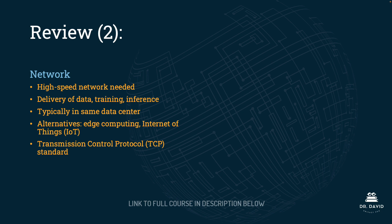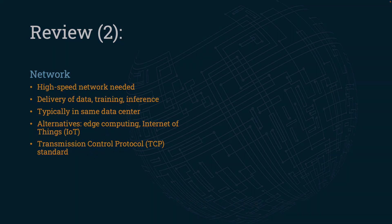When it comes to network, remember that a high-speed network connection is necessary. This helps to better facilitate the delivery of the data, improves the training, and then later the inferences. It's best if everything is under one roof in the same data center, but there are alternatives such as edge computing and internet of things, or IoT. Finally, the standard protocol for networking is TCP, or transmission control protocol.